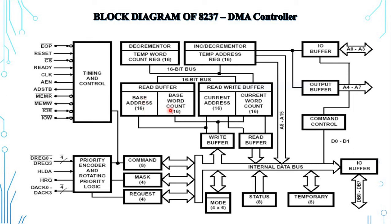The second register is the current address register (CAR), a 16-bit register used to hold the current memory address being accessed during the DMA transfer. The address is automatically incremented or decremented after each transfer and the resulting address value is stored in the current register.